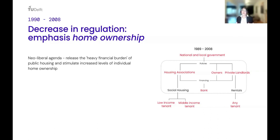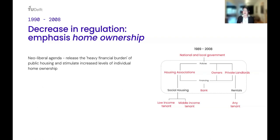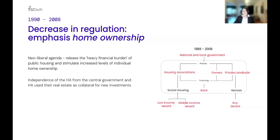From roughly 1990 to 2008, there was a massive decrease in regulation, now with an emphasis on home ownership. This follows the broader neo-liberal agenda that aimed to release the heavy financial burden of public housing and stimulate individual home ownership. Housing associations were privatized and now get their financing directly from the bank. Social housing remained available for low and middle income tenants, and housing associations used their inherited real estate as collateral for new investments.